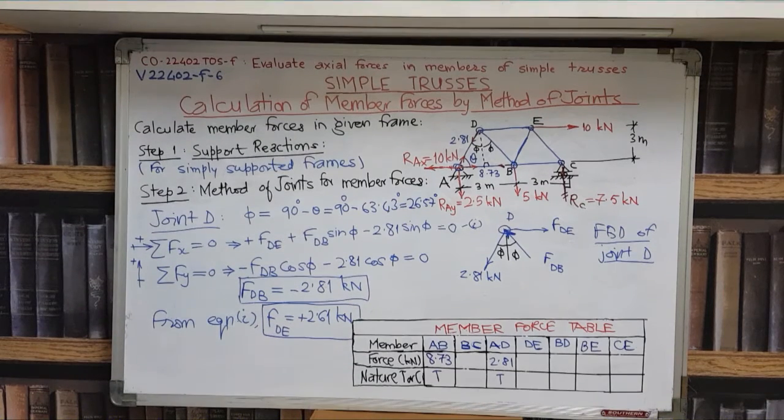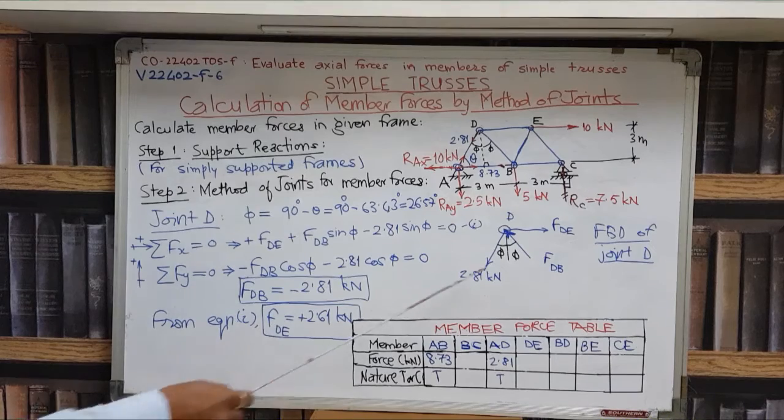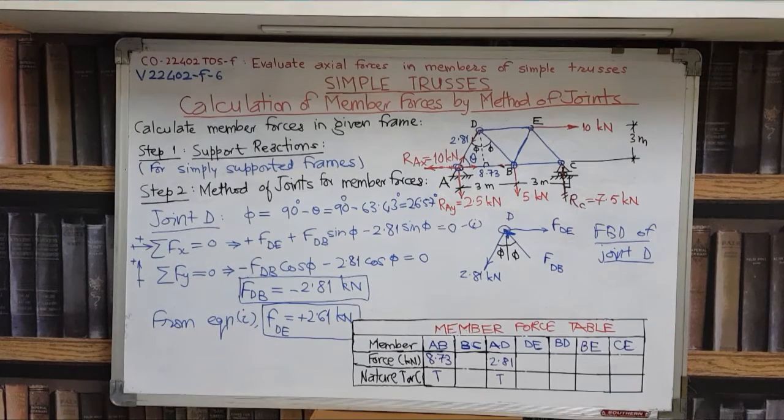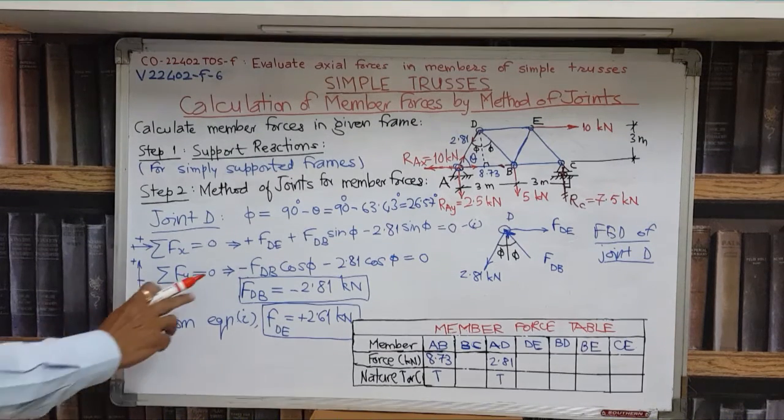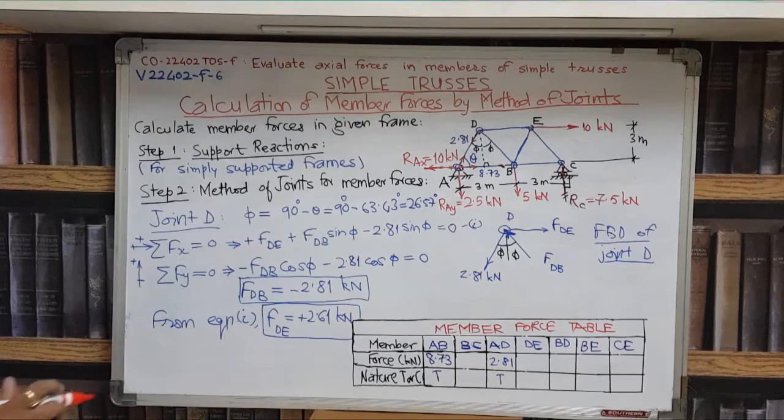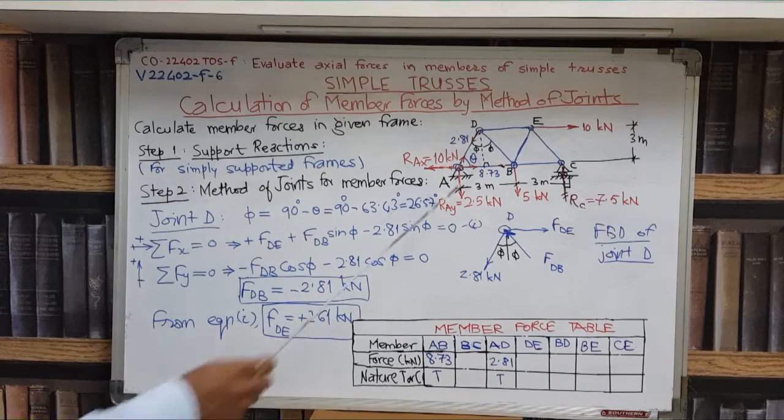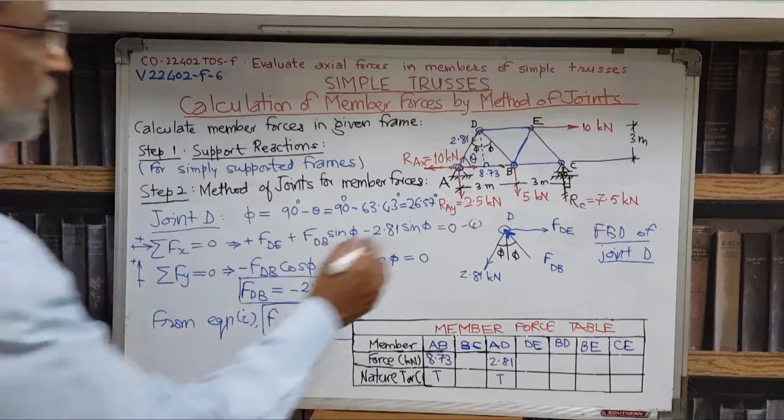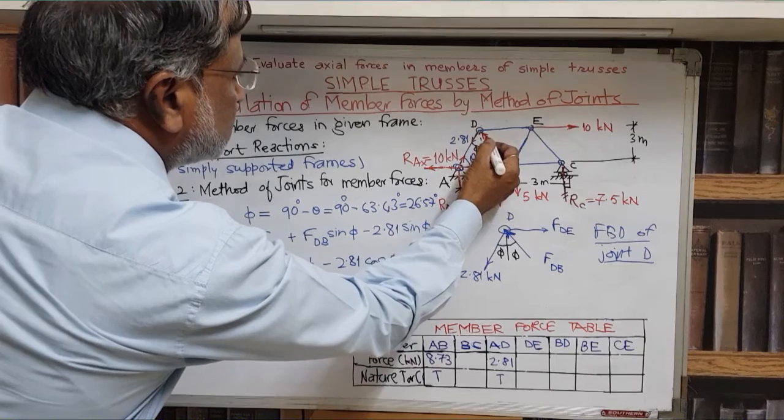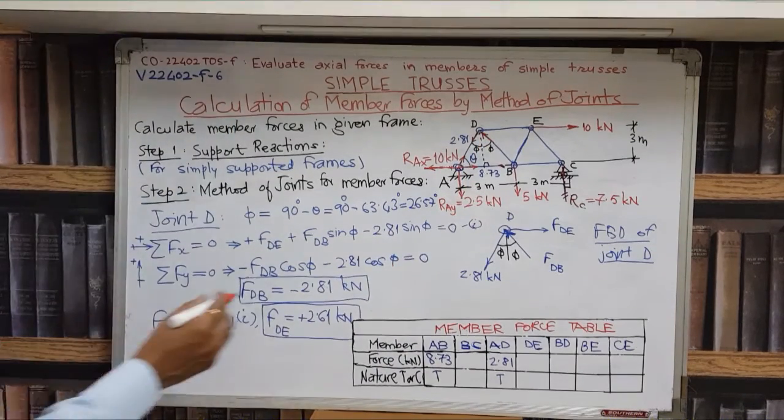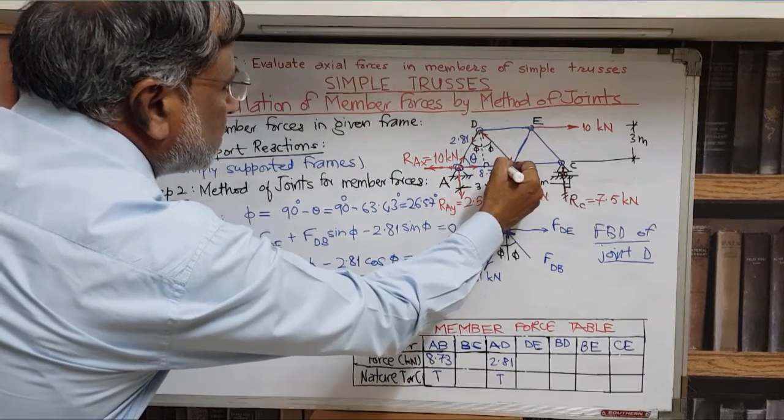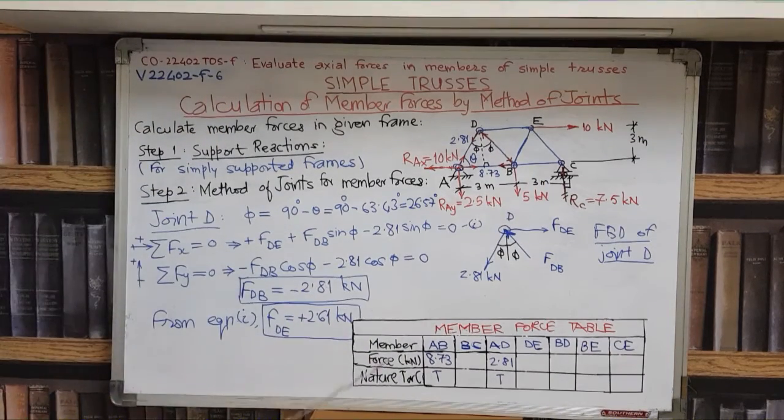So this has given the member forces. FDB, its direction as shown here should be like this. Each member will have two arrows equal and opposite. So if you have got this one arrow, then automatically the second arrow you can blindly draw in the opposite direction.